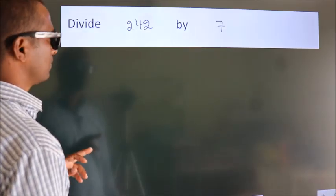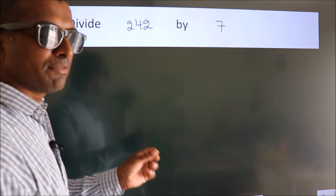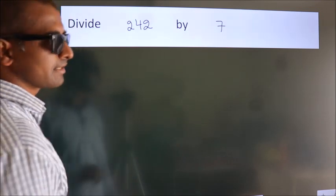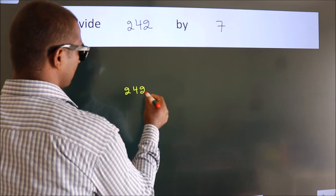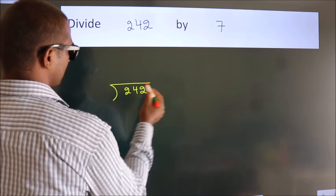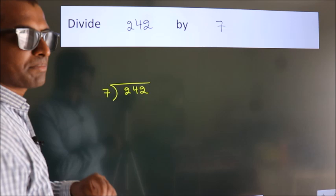Divide 242 by 7. To do this division, we should frame it in this way. 242 here, 7 here. This is your step 1.